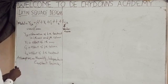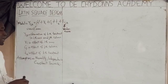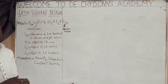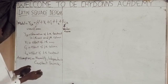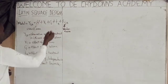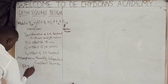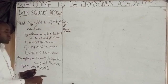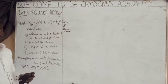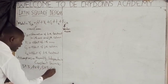In Latin Square design, the arrangement is called the order or dimension. Just as in matrix notation, the order is written as three by three, four by four, or five by five. Once you write this, we do not multiply it out.